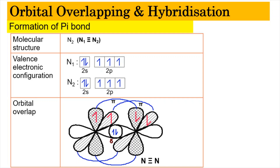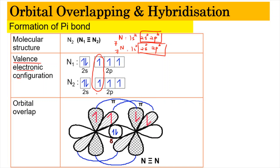Now let's look at pi bond formation in nitrogen, N₂. Nitrogen has seven electrons: configuration 1s² 2s² 2p³. We write it for both nitrogen atoms and focus on valence electrons: 2s² 2p³ for each. Nitrogen has three unpaired p electrons (px, py, pz). One forms a sigma bond, and the other two form pi bonds, giving nitrogen a triple bond: one sigma and two pi bonds.